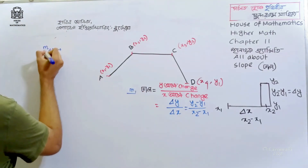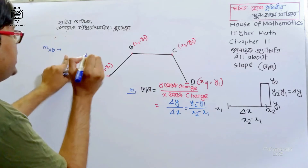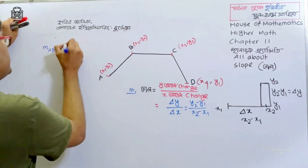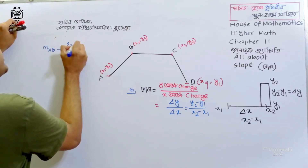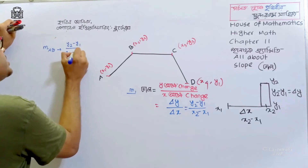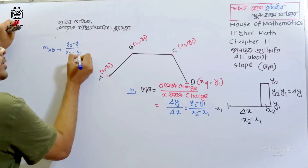M of AB: the slope of AB equals (y2 minus y1) divided by (x2 minus x1).